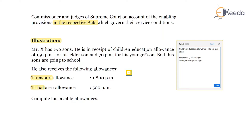In no case should you think that cumulatively, since there are two children, the combined 200 per month limit will be applicable — that is not the case. The exemption is available per child. For the elder son, 150 is received accordingly 50 per month will be taxable. The remaining unused exemption for the younger son — 30 per month — cannot be utilized against the elder son. The limit is to be seen per month per child. For the younger son, nothing is taxable.